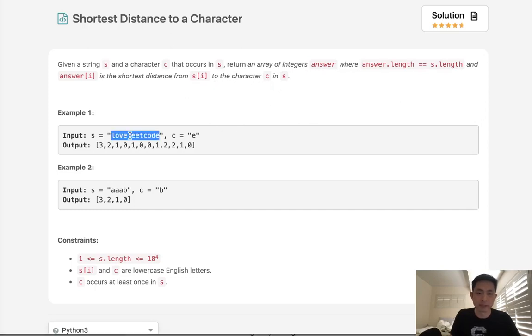If we have this example here and our character was E, we can see that the first position is going to be 3 because the closest E is 3 spaces away. In the same fashion, if we had this letter here, we could see that the closest E would be 2 positions away.